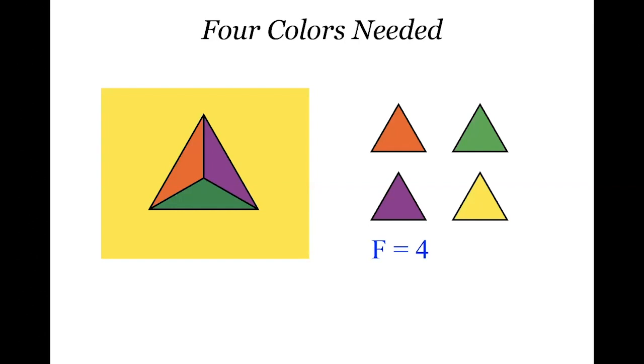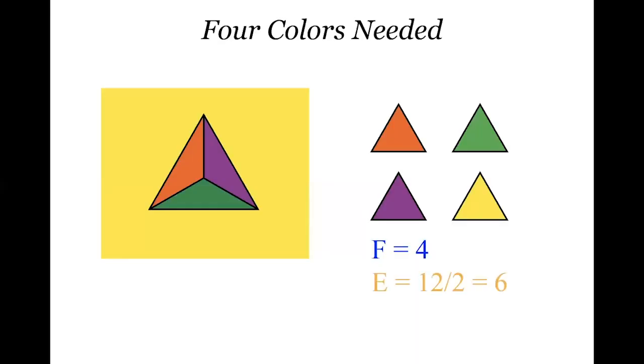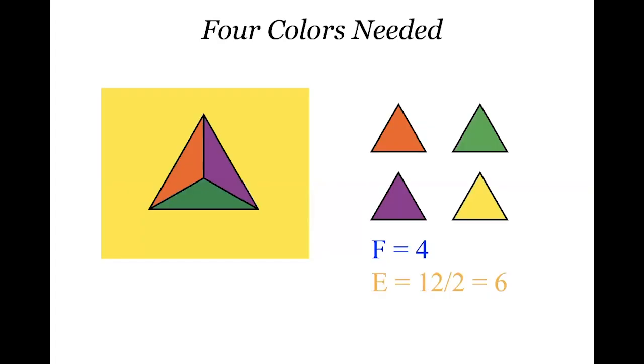The face count is clear: four faces. For edges, before putting the triangles together there are 12 edges total — three for each of four triangles. But each edge after assembly is between two different regions, so we're counting them all twice. The total number of edges is 12 divided by 2, which is six. And you can verify: whether you know about tetrahedra or count on the picture, indeed there are six edges.